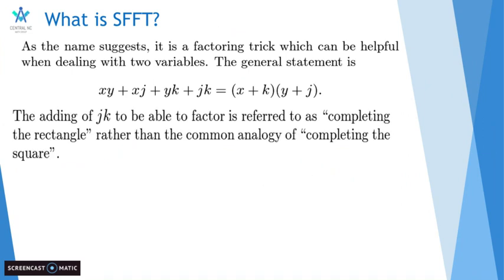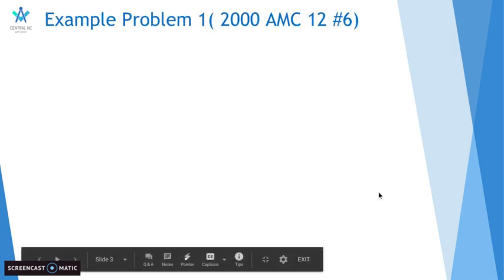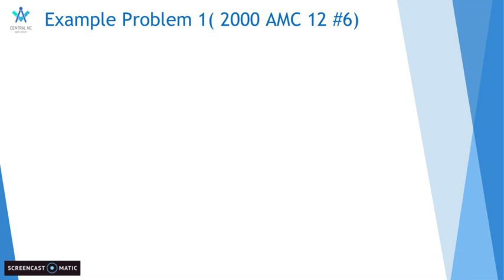The adding of the jk constant to be able to factor is referred to as completing the rectangle, rather than the common analogy of completing the square. Usually the coefficient on the xy term is 1, but sometimes it is greater than 1, which makes factoring a little bit more complex. Simon's favorite factoring trick is best taught using example problems. We will be going through three of them.